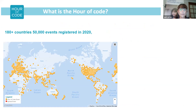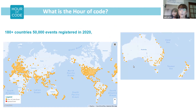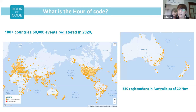Looking across the world, each dot shows you where an Hour of Code event is going to happen in 2020. So far 50,000 events have been registered across over 180 countries. In Australia alone we have 550 registrations as of the 20th of November. Hopefully over the next two weeks that figure will double as schools and organisations come on board with registering their events.